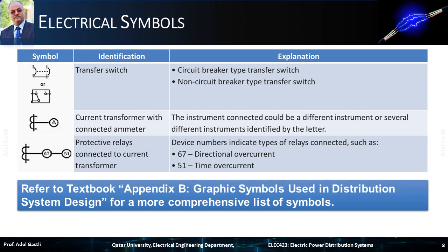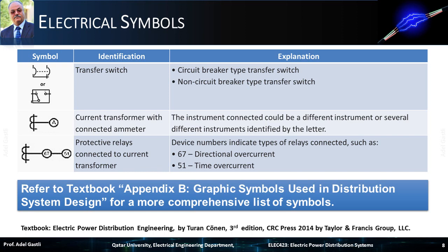For a more comprehensive list of symbols, you can refer to the textbook appendix B, which is about graphic symbols used in distribution system design. The textbook used here is Electric Power Distribution Engineering by Turin Conin, 3rd edition, CRC Press 2014, published by Taylor and Francis Group LLC.